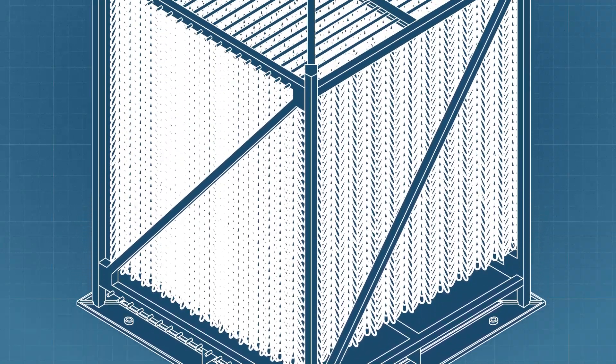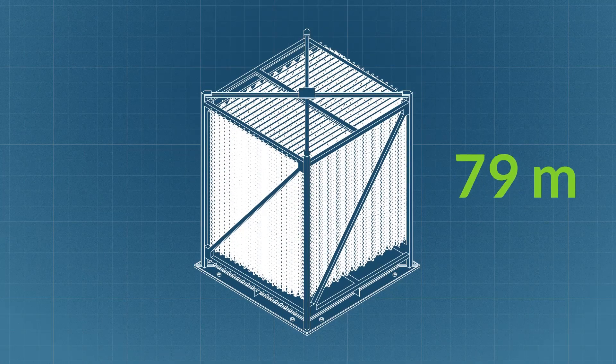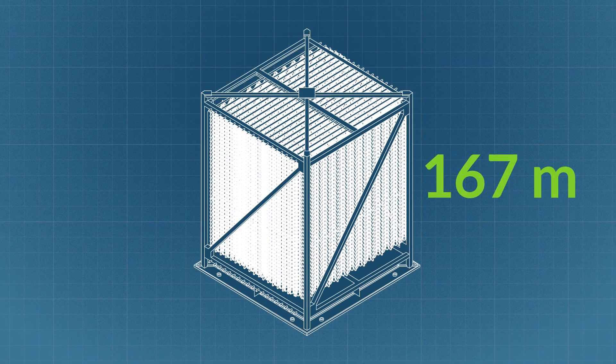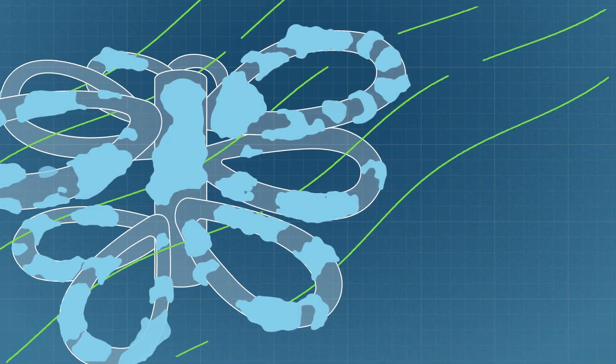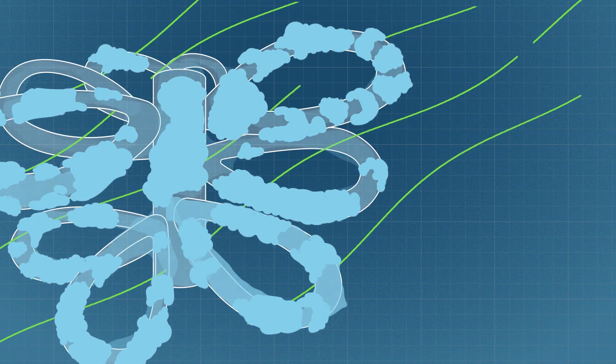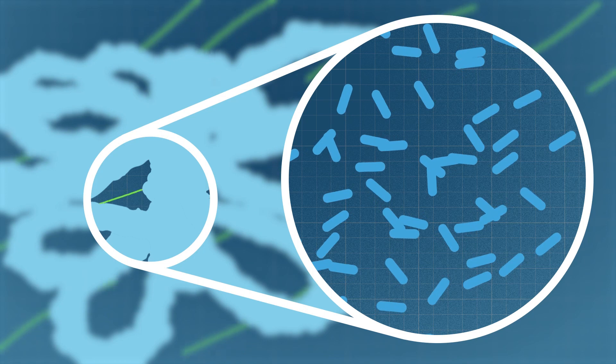Biocord reactors are like condominiums for bacteria. Each one contains hundreds of meters of media that enables a robust biofilm to form. This attached growth process achieves a much higher concentration of bacteria than an ordinary lagoon cell and significantly improves the removal of nutrients and organics.